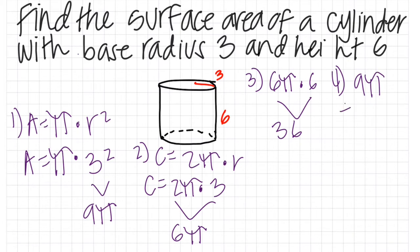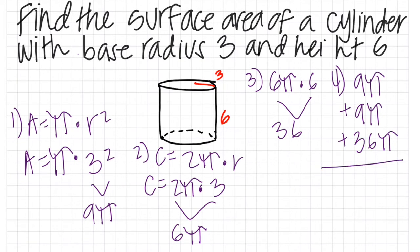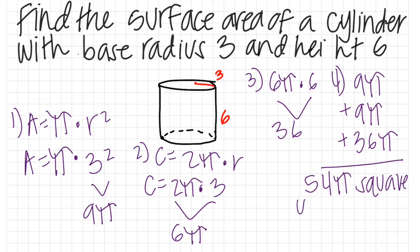The next step is to add the top of the cylinder plus the bottom of the cylinder plus the area of the side of the cylinder. This equals the surface area of the entire cylinder, which is 54π square units.